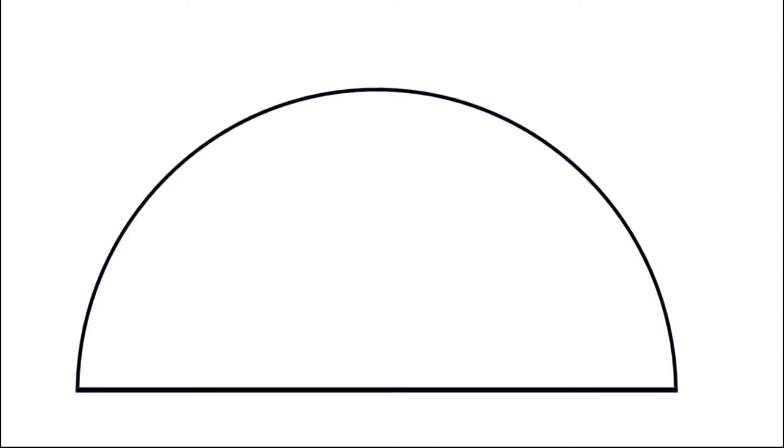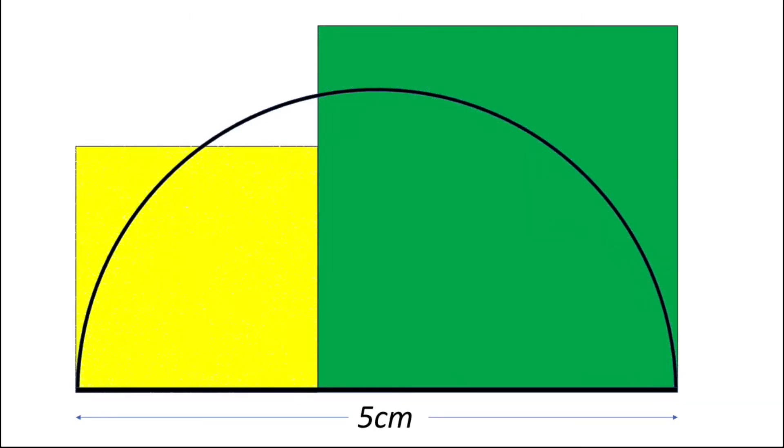Hello dear friends, today we'll have a problem of semicircle and squares. We have a semicircle here with diameter 5 centimeters. We have squares inside as shown in the figure. We need to find the sum of areas of these squares, so let's try this problem.